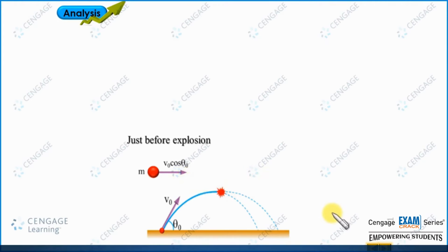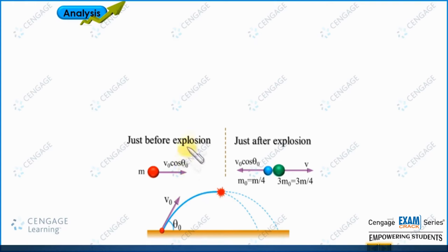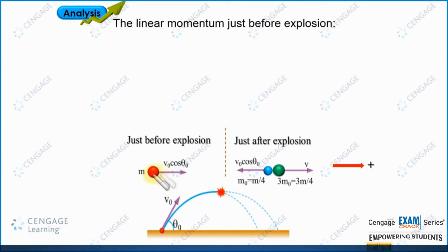Now let us analyze the heavier part. The heavier part has mass 3 m naught and its velocity is unknown. We assume the unknown direction is rightward and let the magnitude of this velocity be v. At the topmost point, if we consider this object as a system in the horizontal direction, there is no external force acting on the system. That means the linear momentum of the system should be conserved. Linear momentum just before explosion and just after explosion should be equal. Let us consider the rightward direction as positive. The linear momentum just before explosion is p initial equals m multiplied by v naught cos theta naught.